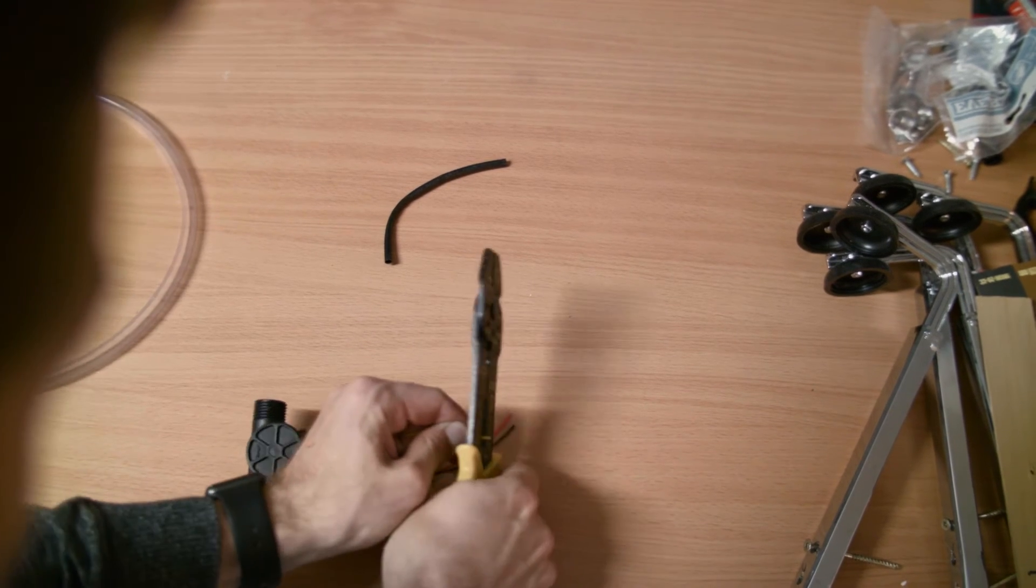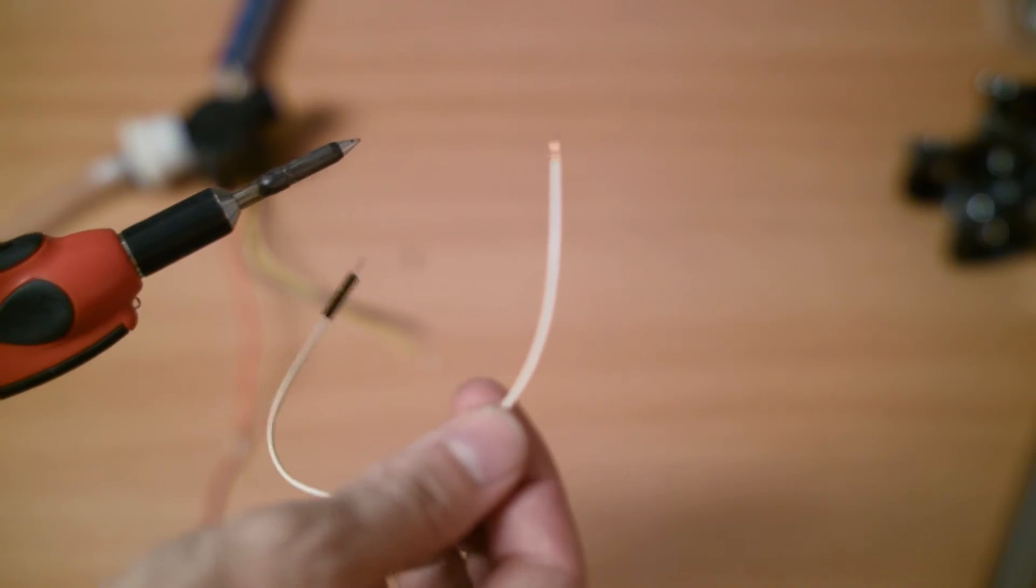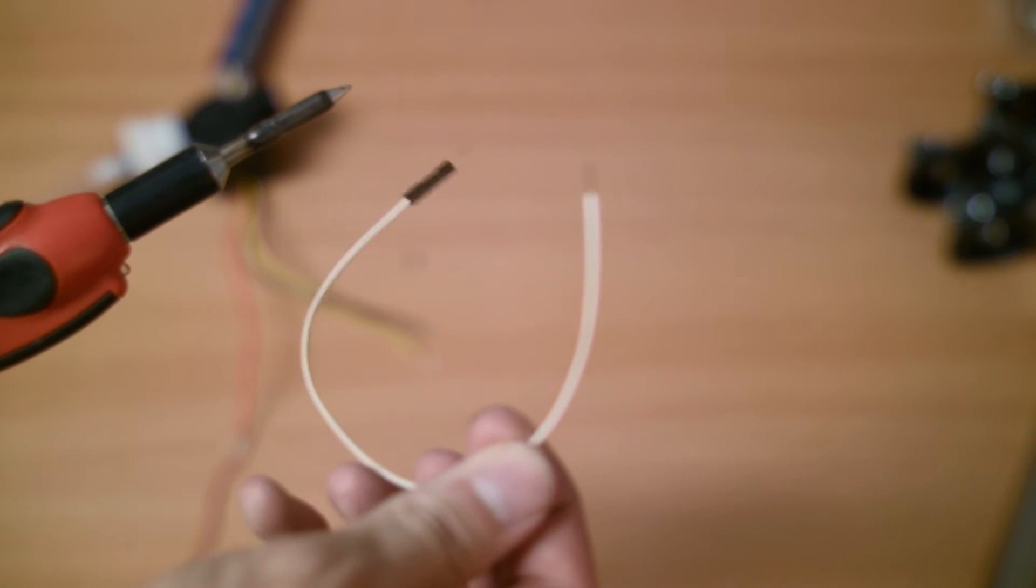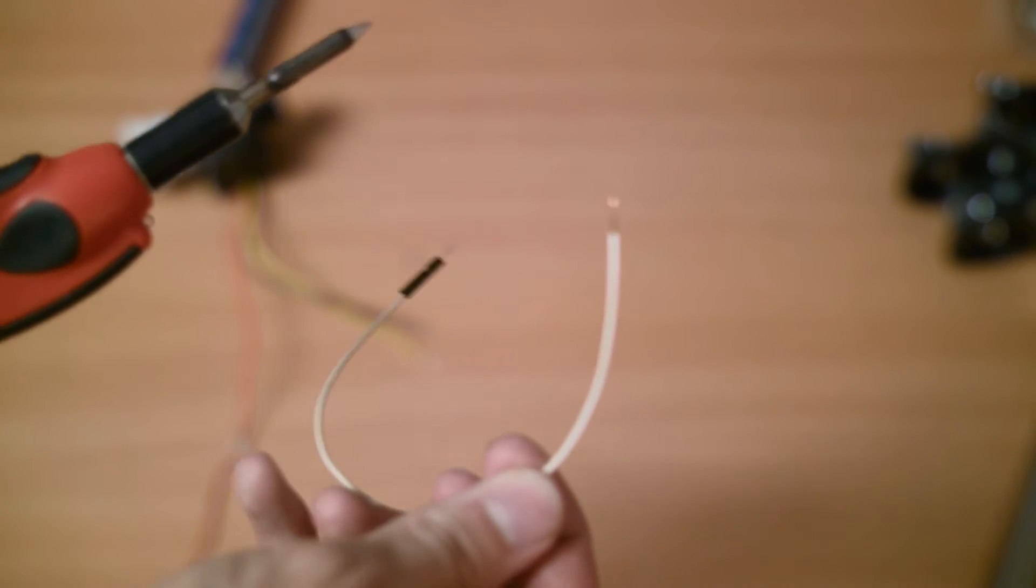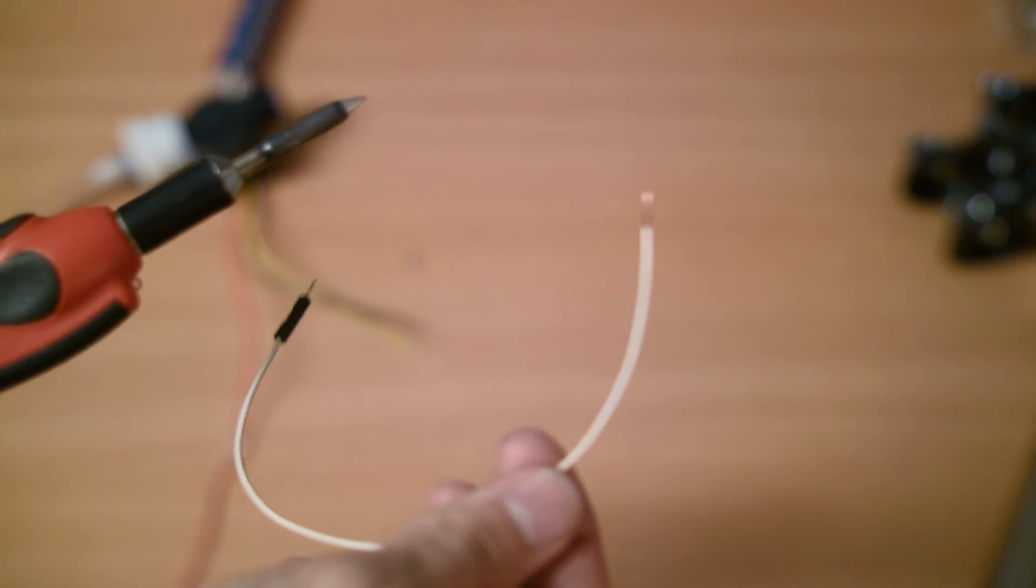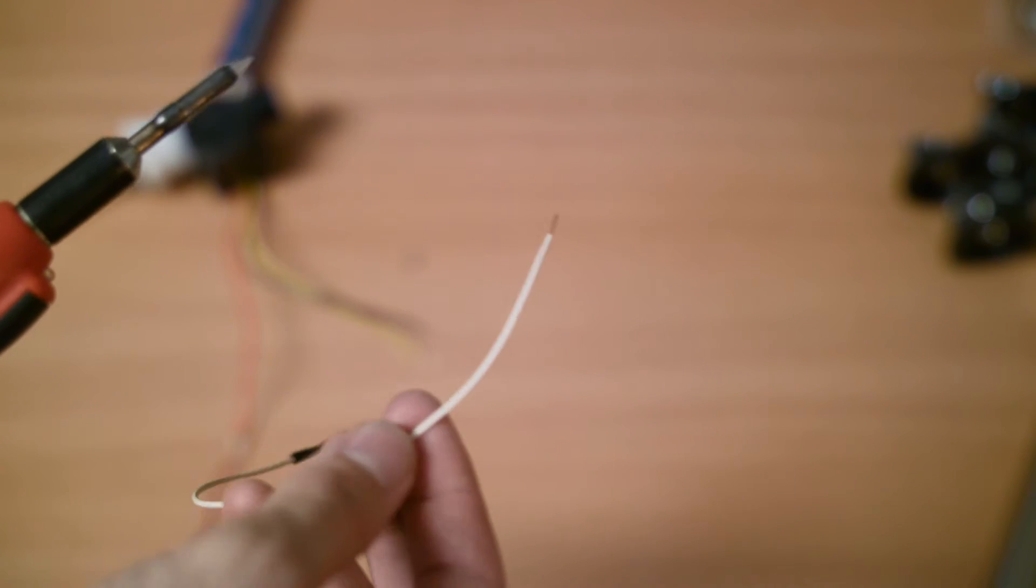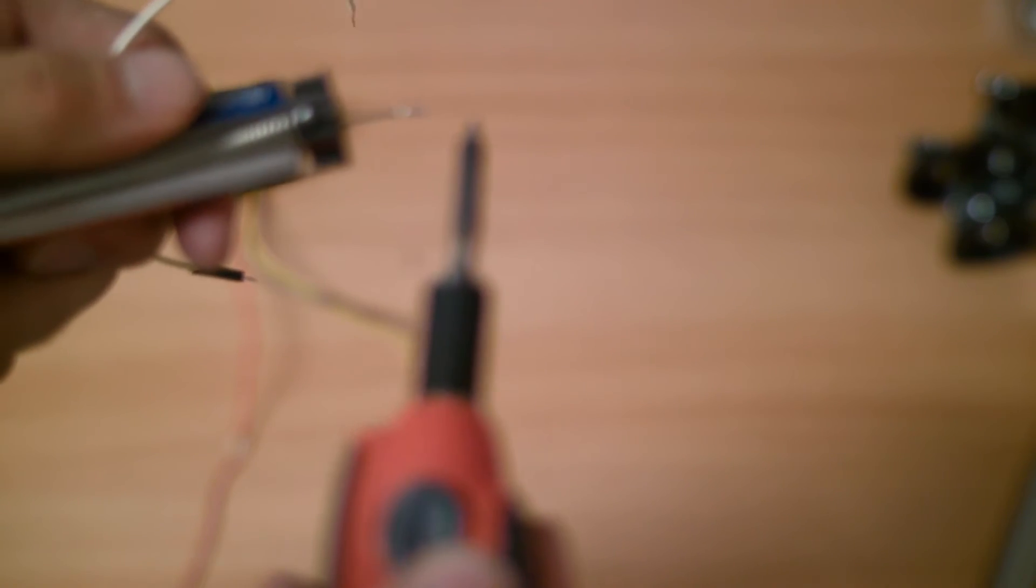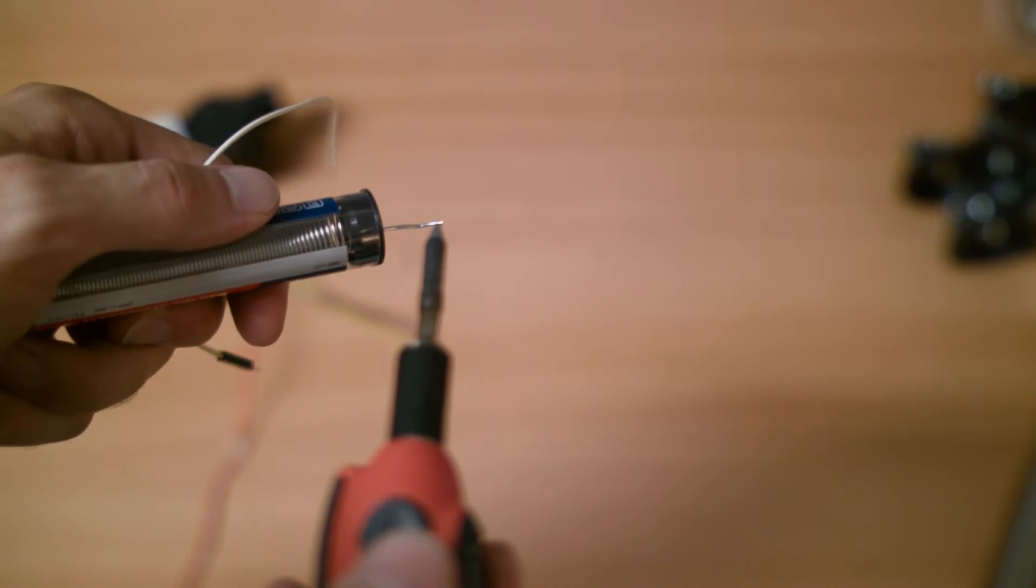I'm soldering wires now, and I want to put these connectors on the end so we have a way to easily connect to the Arduino. If you've never soldered before, there's a pretty nice trick to get some good solder points. You just want to basically get some solder on your soldering iron.